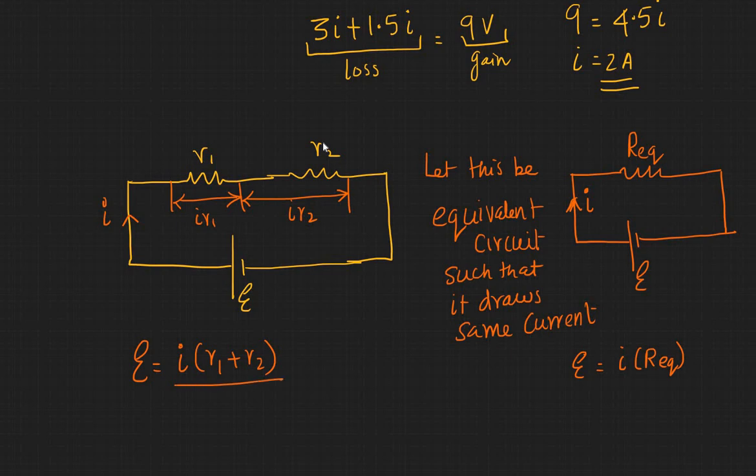So in general, when you compare both of these, you can say that to construct an equivalent circuit which draws a similar current, you will have to use an equivalent resistance of R1 plus R2. So that's how you can think.